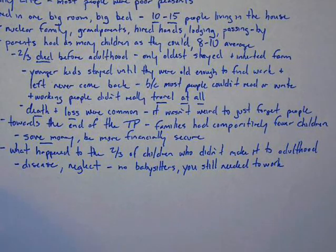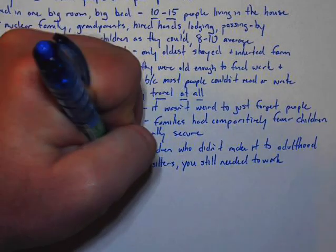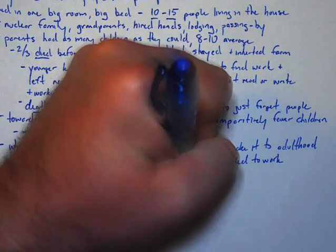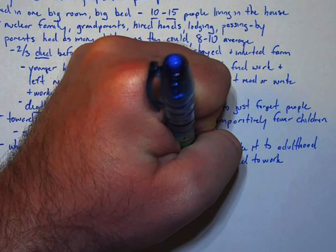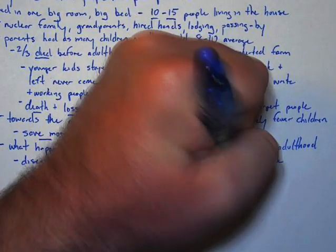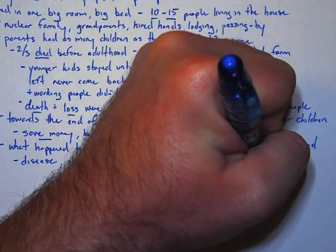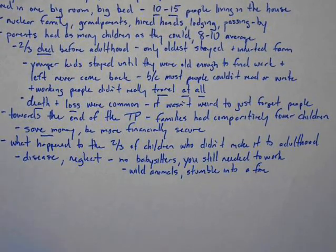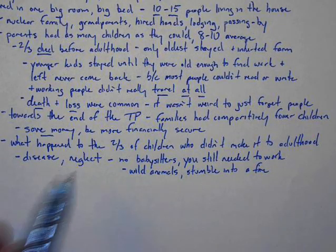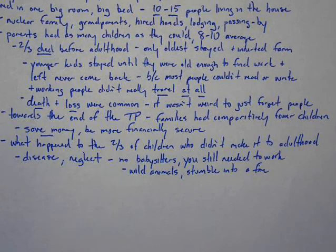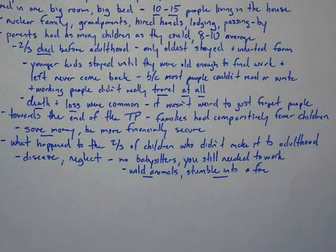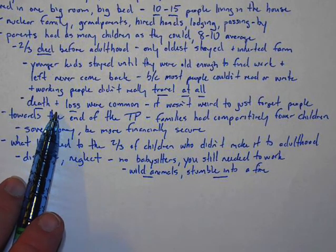You don't want your child to get hurt, but you also don't have anybody to watch the child. So sometimes wild animals might run off with a baby, sometimes a baby might stumble as they're learning to walk and fall into a fire. That happened. It's not like every child died of disease - there was also a lot of neglect because the parents needed to work. If they didn't work, they would starve. And death and loss were pretty common, so you got over it.